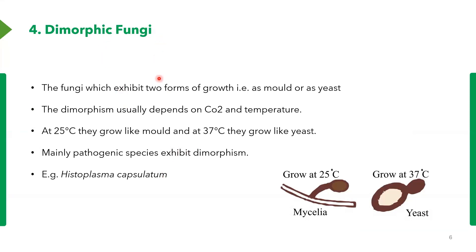Finally, we have dimorphic fungi. It is called dimorphic because it exhibits two forms of growth — either as a mould form or a yeast form. It switches between these forms depending on temperature or carbon dioxide levels; however, temperature is the most common determinant. At 25 degrees, when it's a bit cold, they grow like mould. When it's a bit hot, around 37 degrees, they grow like yeast. They are mainly pathogenic because they have the ability to exist in both environments. An example is Histoplasma capsulatum, which causes histoplasmosis.